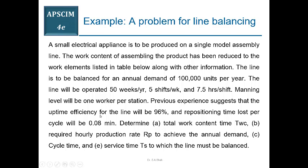Previous experience suggests that the uptime efficiency for the line will be 96%, so line losses are 4%. The actual efficiency of your system is 0.96. Repositioning time lost per cycle will be 0.08 minute — TR is given. You will subtract that from the theoretical cycle time TC to get the service time TS.